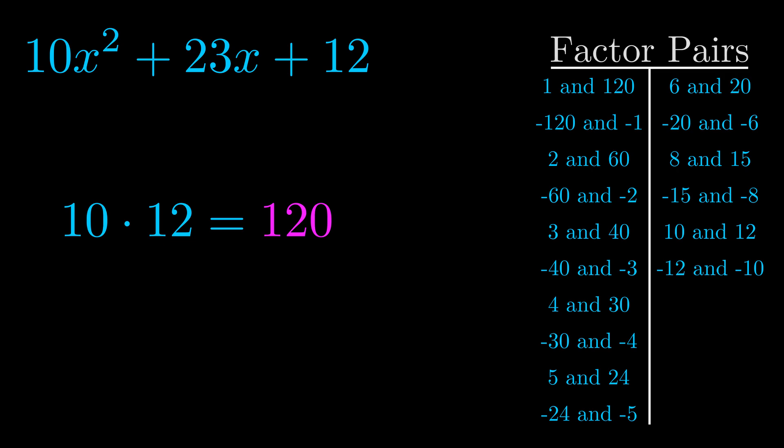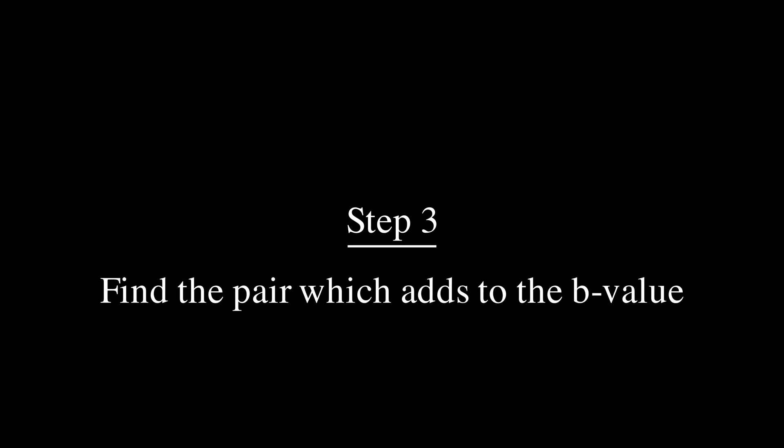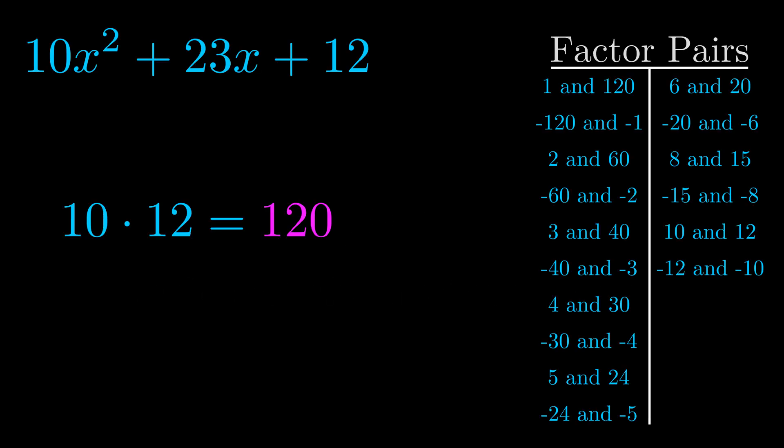Now once you have these factor pairs the goal is to find which of these pairs adds to the b value. The b value is the coefficient on the x term. That's the middle term, the one that we haven't done anything with yet. And really this is the only factor pair that we need.